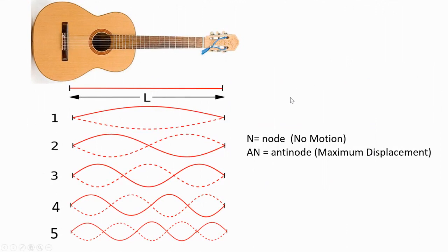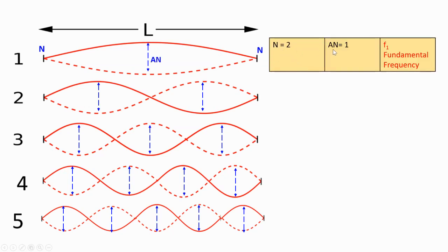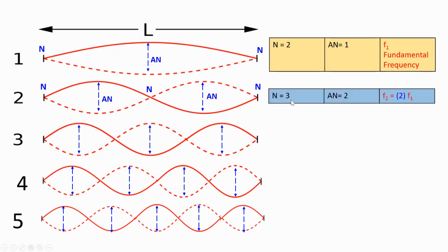Now let's identify nodes and antinodes for the five frequencies of our guitar string. For the first frequency, we have one node at each fixed end and one antinode in the middle: two nodes, one antinode — that is the fundamental frequency. For the second frequency, we have three nodes and two antinodes, and the second frequency is two times the fundamental frequency — this is the second harmonic.